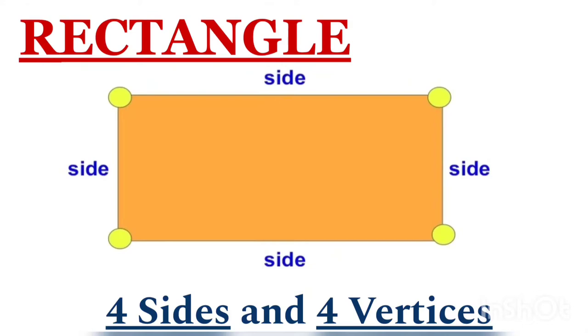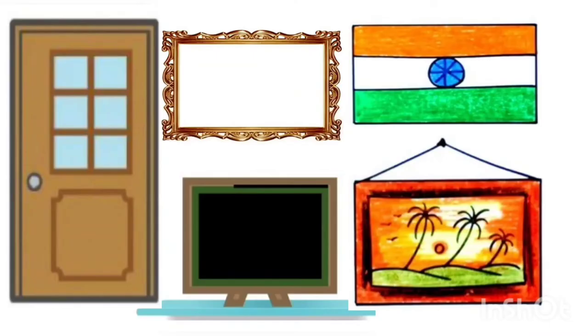Rectangle. This is a rectangle. It has four sides and four vertices. In a rectangle, opposite sides are equal. Two sides are big and two sides are small. These are some examples of rectangle: door, mirror, blackboard, flag, and picture frame.